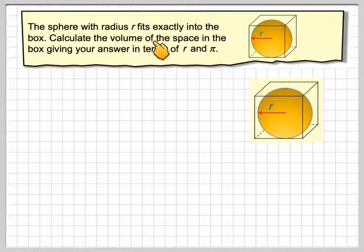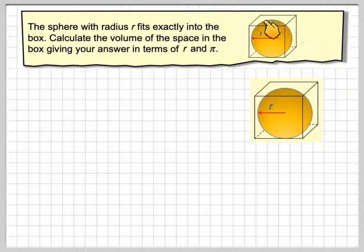The sphere with radius r fits exactly into the box. So what we've got is a cube box and a sphere which fits in exactly, so all the edges of the sphere are touching the top, the bottom, and the sides of the box. Calculate the volume of the space in the box, giving your answer in terms of r and pi.